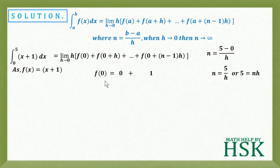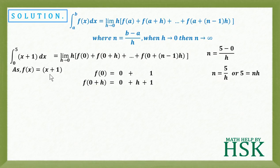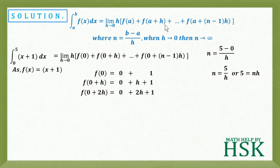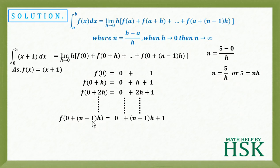Calculating each term: f(0) = 0 + 1 = 1; f(0+h) = 0 + h + 1; f(0+2h) = 0 + 2h + 1 — this extra term is shown for clarity. And the last term f(0+(n−1)h) = (n−1)h + 1. Notice the constant 1 remains unchanged in each term.